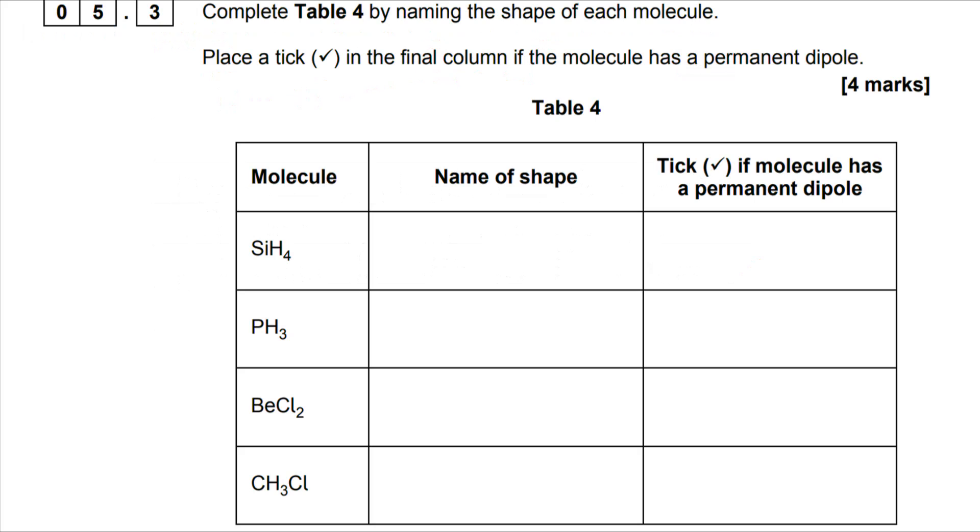Shapes of molecules now, and there's a lot of these that you're hopefully familiar with from your practice. SiH4, well silicon is in group four, four electrons in the outer shell, so four bonding pairs, no lone pairs, it's tetrahedral.